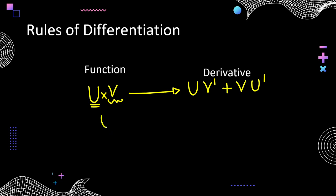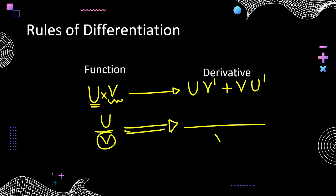The last rule is the quotient rule for u/v. To remember: write the denominator squared at the bottom, so v^2. Then write: v times the derivative of the numerator (u'), minus u times the derivative of the denominator (v'). In the product rule we add; in the division rule we subtract. So the quotient rule is: (v·u' - u·v') / v^2. That is: denominator as it is times derivative of numerator, minus numerator as it is times derivative of denominator, all divided by denominator squared.